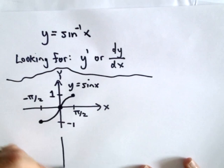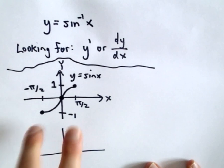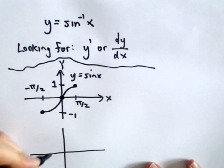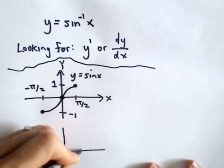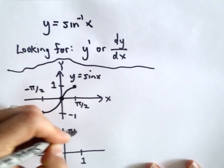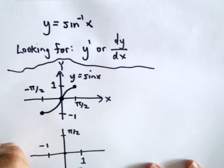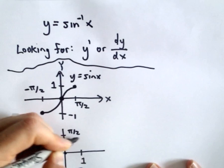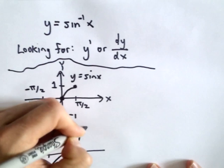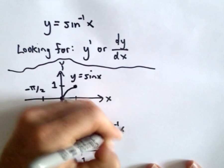The only reason I'm graphing y equals sine x is because I want the graph of inverse sine x. Recall you switch the domain and range, so now the domain will be from negative one to positive one, and the range will be from negative pi over 2 to positive pi over 2. The graph looks something roughly like that — so there's y equals inverse sine x.